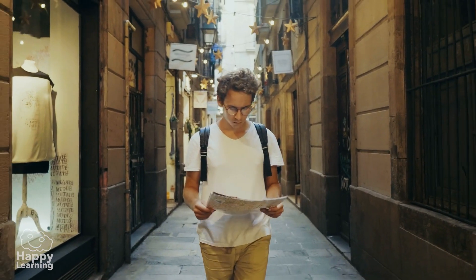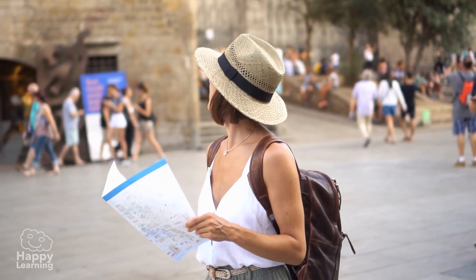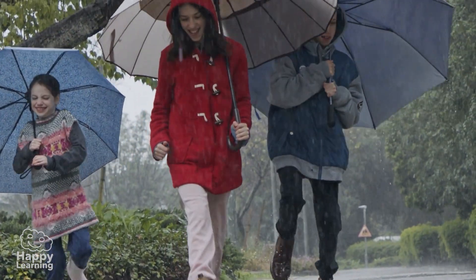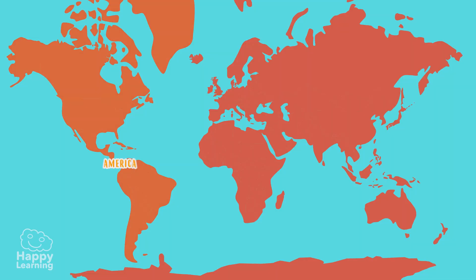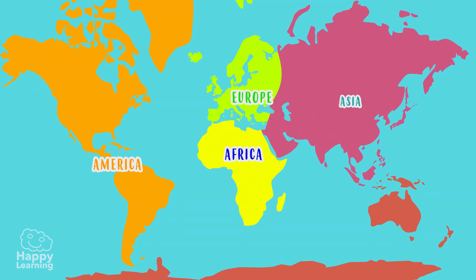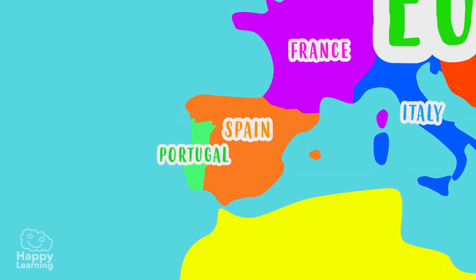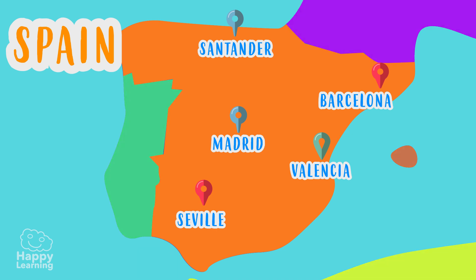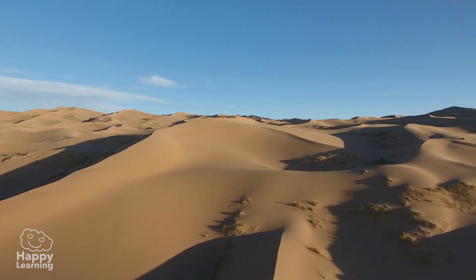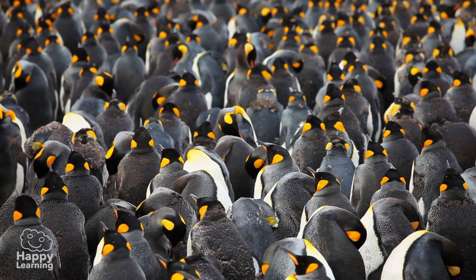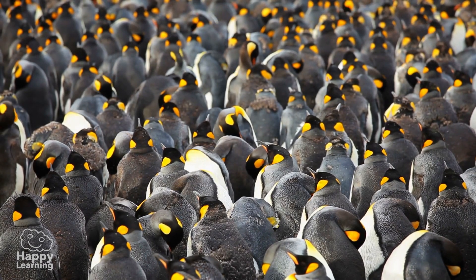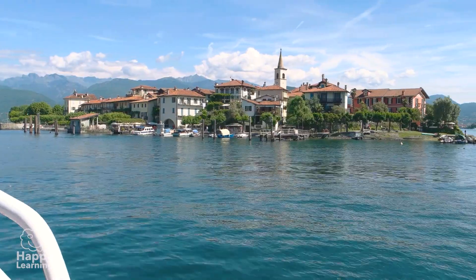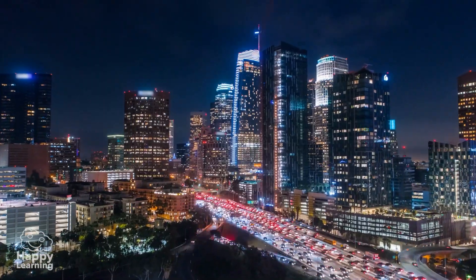But apart from that, what else are maps good for? Well, for many things. To learn where each continent, each country, or each city is, or to know where there's a desert, or maybe even where penguins live. But because there are so many different places on our planet, different types of maps have been invented.